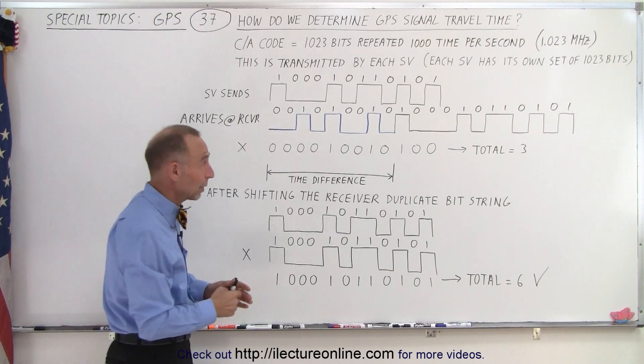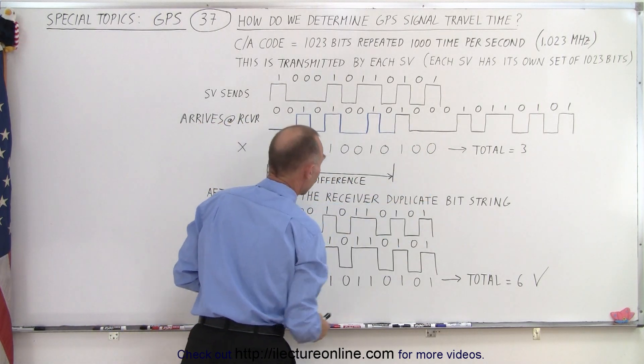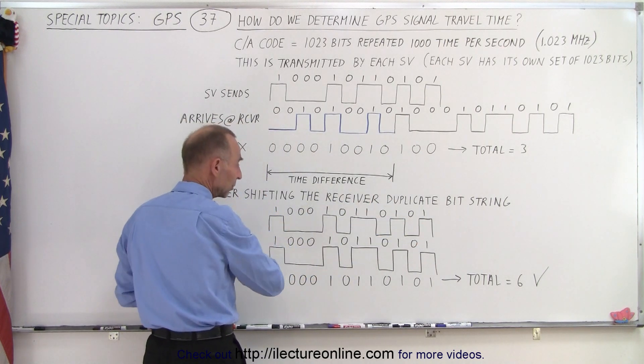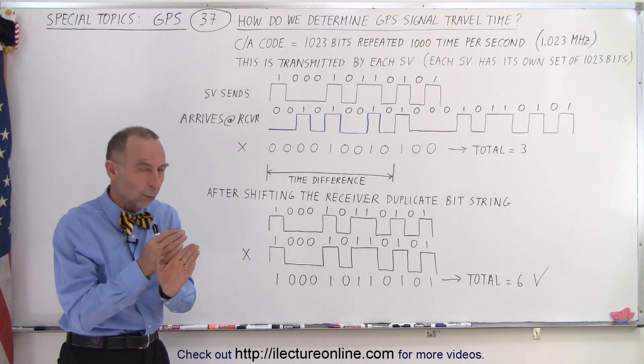Well how do they match up perfectly? Well we just shift it over one bit, we make the multiplication again, we shift over another bit, we do the calculation, we shift over another bit, we do the calculation and each time we see what the total number of aligned one bits are.